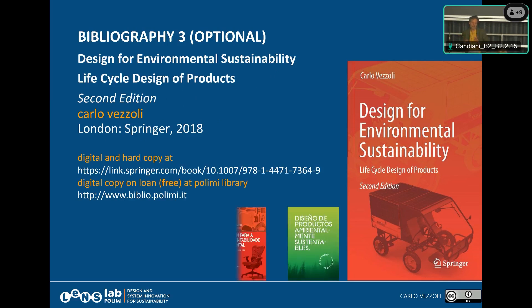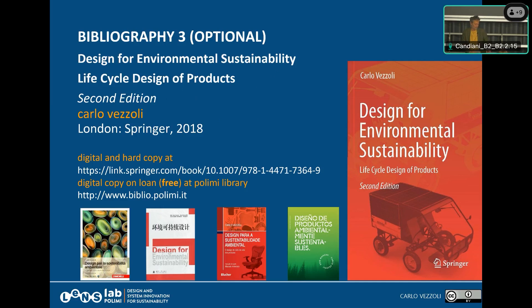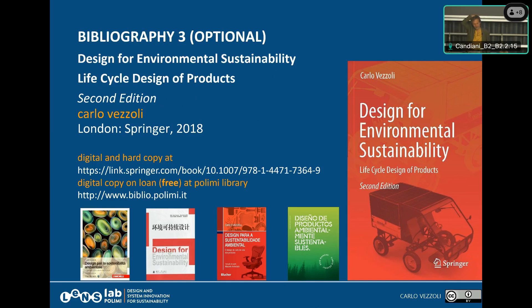The third book is the only one with copyright — it's not open access. The first edition was from around 1998–1999. You can find it in different languages. If you buy it in Italian, it's 25 euros; the English version by Springer is more than 200 euros, which I find frustrating. However, you can find both the Italian and English versions in digital form at the Polimi library — so if you're interested, you can download it there. But this is really optional.